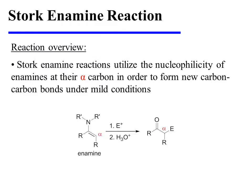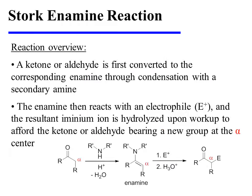Stork enamine reactions utilize the nucleophilicity of enamines at their alpha carbon in order to form new carbon-carbon bonds under mild conditions. A ketone or aldehyde is first converted to the corresponding enamine through condensation with a secondary amine. The enamine then reacts with an electrophile, and the resultant iminium ion is hydrolyzed upon workup so as to afford the ketone or aldehyde, now bearing a new group at the alpha center.